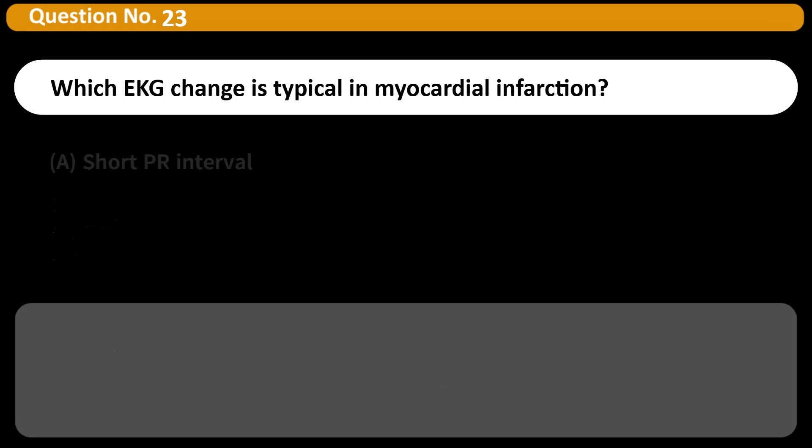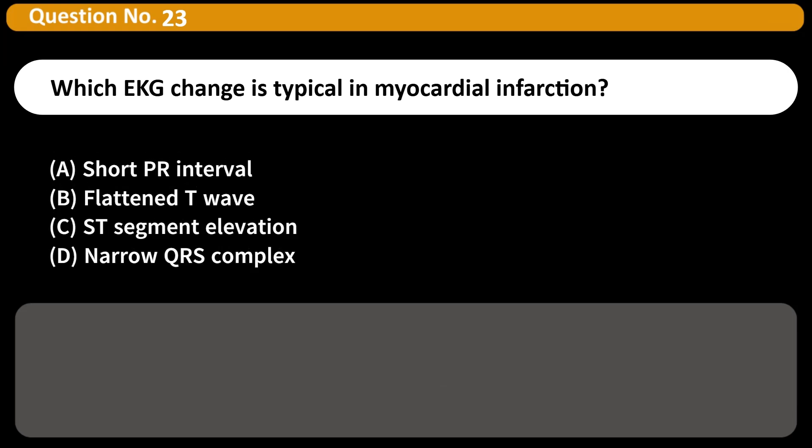Which EKG change is typical in myocardial infarction? A. Short PR interval B. Flattened T wave C. ST segment elevation D. Narrow QRS complex Answer C. ST elevation is often seen in acute myocardial infarction and indicates injury.